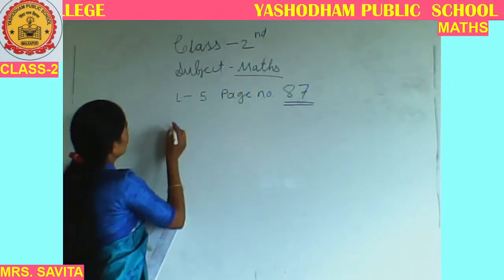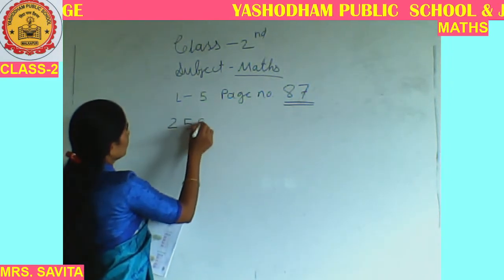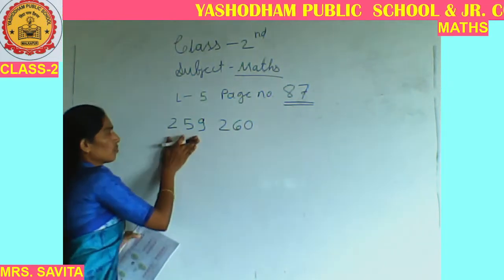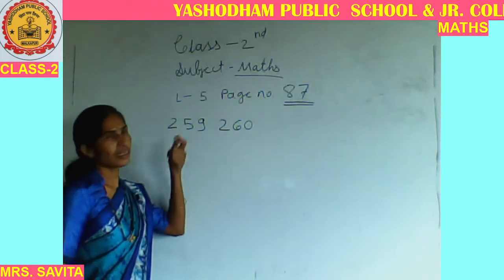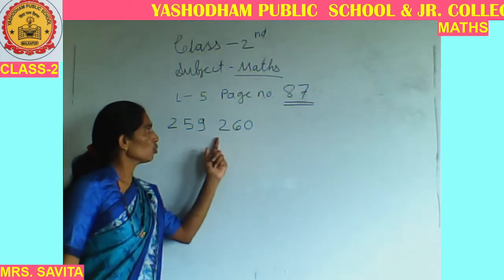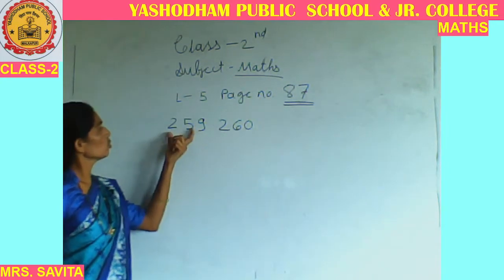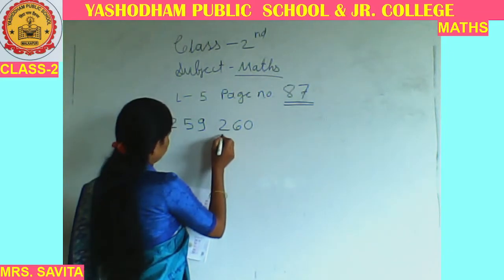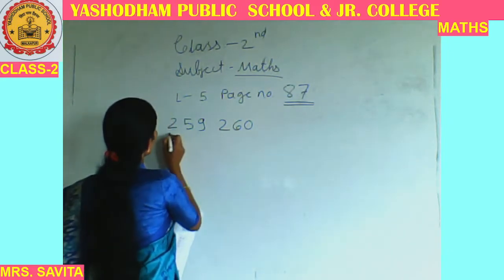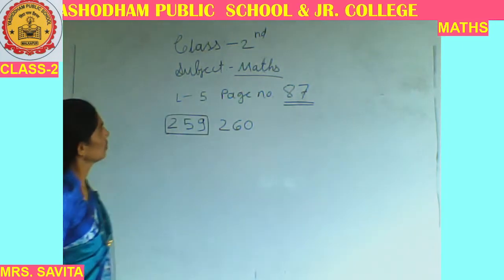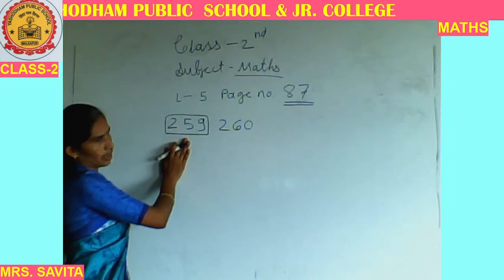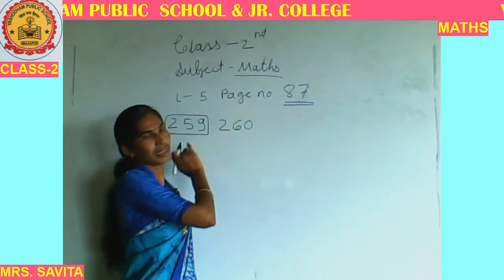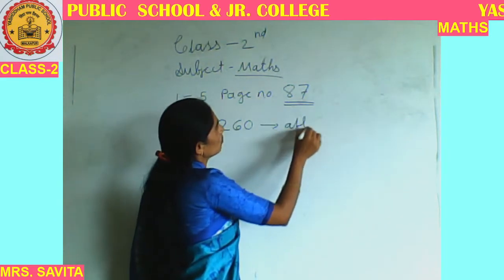So write here 259. It's already done for you — the first example is already shown. Just read the number: 259, 260. So 259 is the before number and 260 is the after number. The number that comes before is called the before number, and the number that comes after is called the after number.